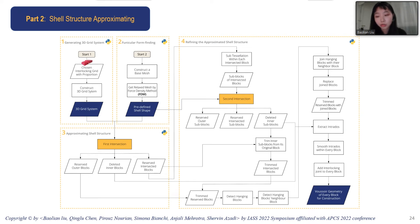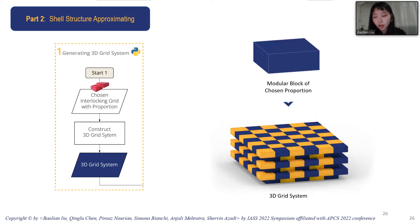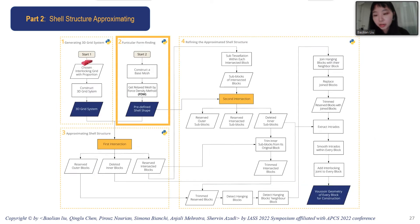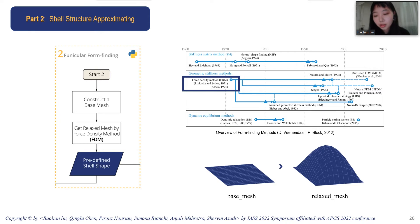The algorithm is divided into four parts. Part one generates the 3D grid from the chosen grid. In the example case, brick dimensions of 150 by 115 by 16 were used, chosen to ensure the brick is easy to lift, compatible with wall thickness, and compatible with the staircase size. The 3D grid system can then be easily generated. Part two generates the funicular shell shape using form-finding methods. We chose the force density method as it is more suitable for compression-only structures, and a relaxed mesh is generated from a base mesh to obtain the shell shape.